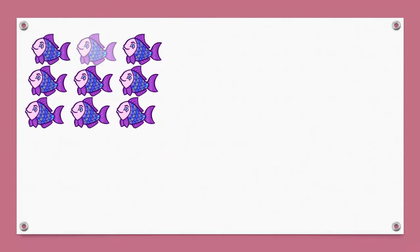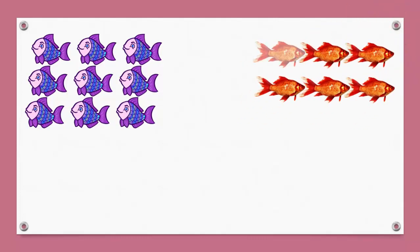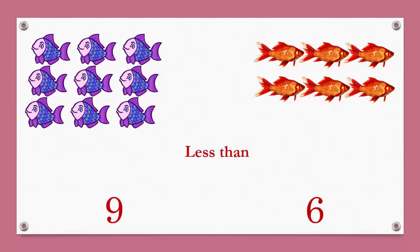1, 2, 3, 4, 5, 6, 7, 8, 9. Now let's count these: 1, 2, 3, 4, 5, 6. On the left hand side there are 9 fishes and on the right hand side there are 6 fishes. To show the less number, we use the less than sign. The back of Mr. Crocodile's mouth always points to the less number.